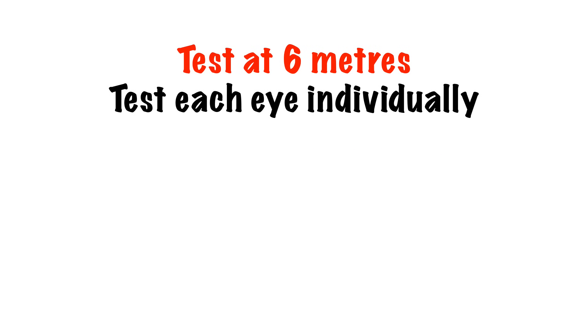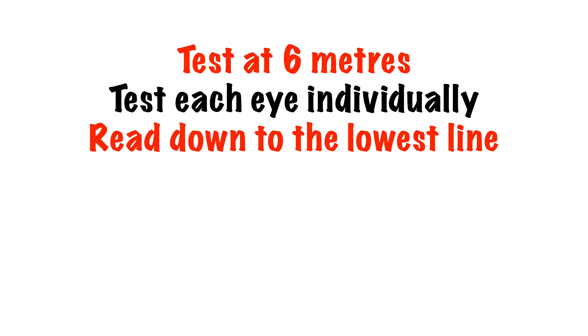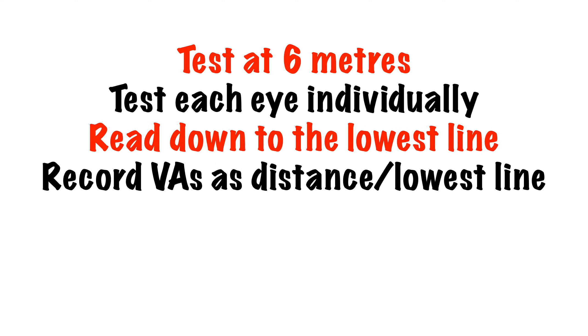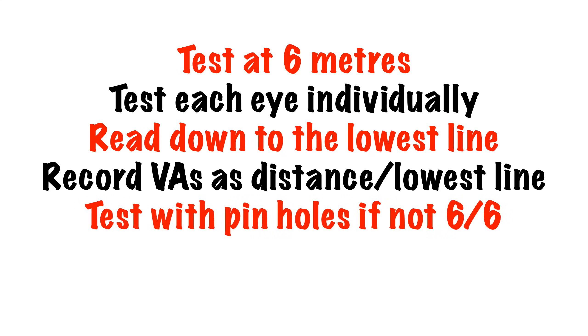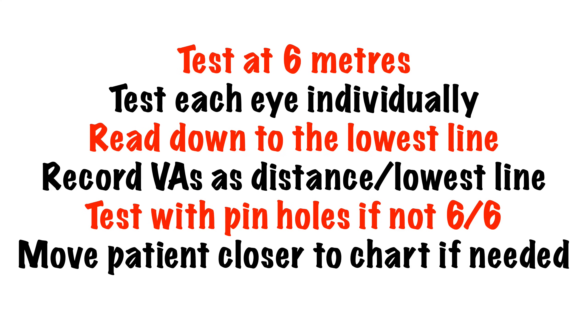So there we have visual acuity in a nutshell — short, sweet and simple. Test the patient at six metres or equivalent. Test each eye individually. Ask them to read down to the lowest line they can. Record the VA as six over the number of the lowest line read. If the vision is not 6/6, retest with a pinhole to correct for any refractive errors. If they can't read the top line, move the patient progressively closer until they can and use that as the distance.